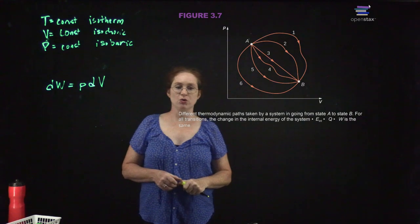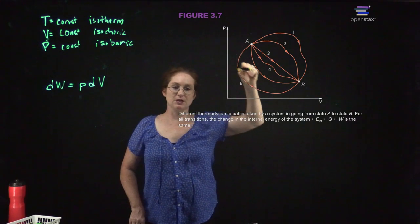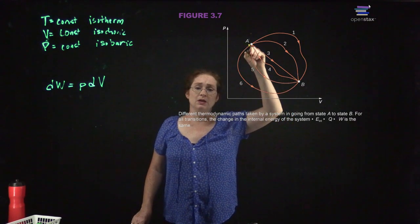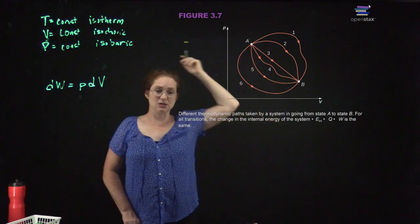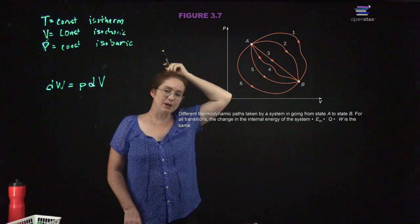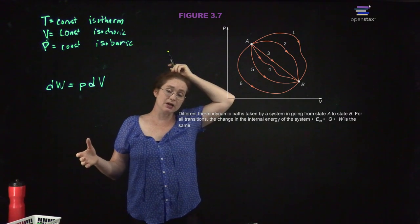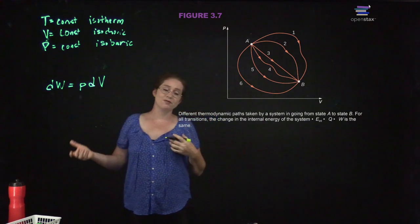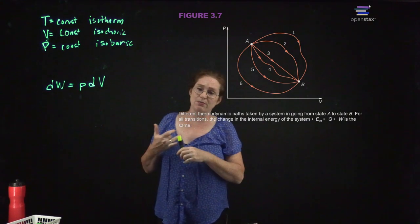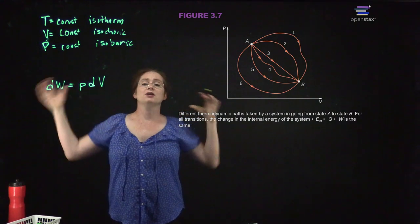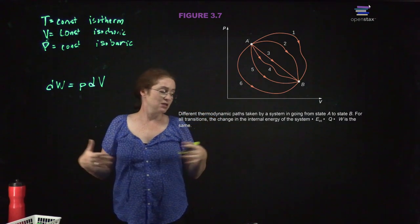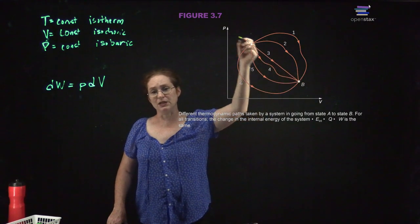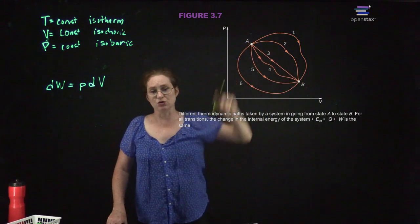This shows different thermodynamic states — you can travel different paths to get to the same point, and you would do different amounts of work in different cases. The ideal gas law is what we call an equation of state, meaning it tells you everything you need to know about the properties of that gas. As soon as you know the temperature and the volume, that tells you the pressure — everything you need to know about an ideal gas. However, the ideal gas law doesn't tell you how you go from A to B. Depending on the route, you can do more or less work.